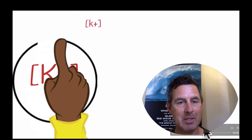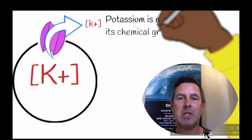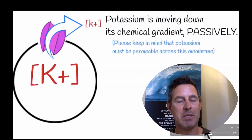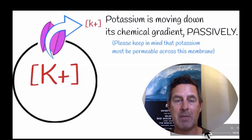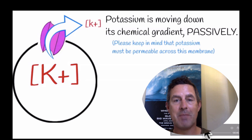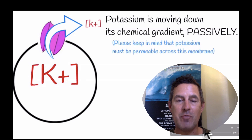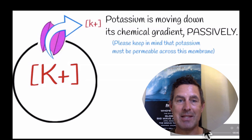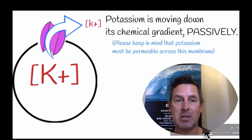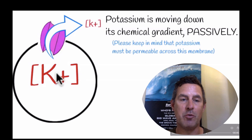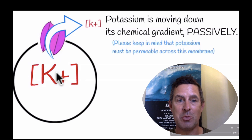If we look at potassium, potassium has a similar situation. The only difference between potassium and sodium is that there is a high concentration of potassium inside of cells and a low concentration of potassium outside of cells. So potassium will move down its chemical gradient, otherwise known as its concentration gradient, from high to low — which is from inside the cell to outside of the cell. Like sodium, it requires a channel protein. Potassium will move from high to low.